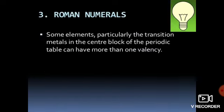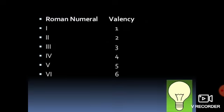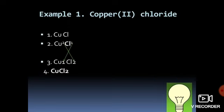Some elements show more than one valency — variable valency. For example, iron has two valencies. The lower valency is called ferrous and the higher is called ferric. In such cases, the valency is shown using Roman numerals written in brackets after the element name, such as iron(II) or iron(III).